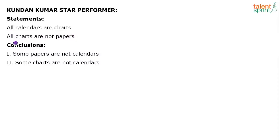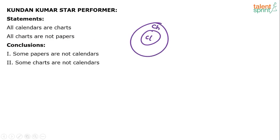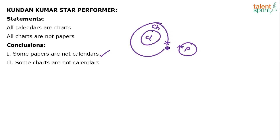Statements: all calendars are charts. All charts are not papers. How do you draw this? All calendars are charts — draw calendars inside charts. All charts are not papers means charts and papers will not overlap — it is a universal negative statement. Now look at the conclusions. Some papers are not calendars — true. In fact, all the papers are not calendars; papers and calendars cannot overlap at all because calendars are completely guarded by charts. So some papers are not calendars is correct. Next conclusion: some charts are not calendars.